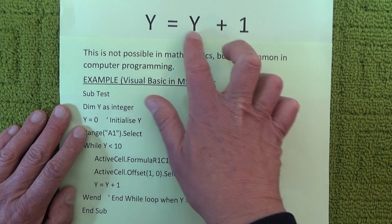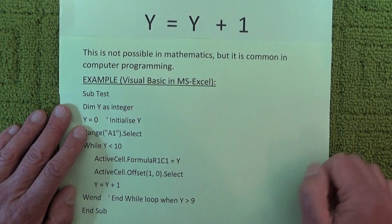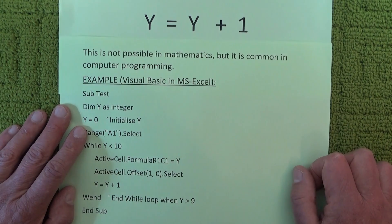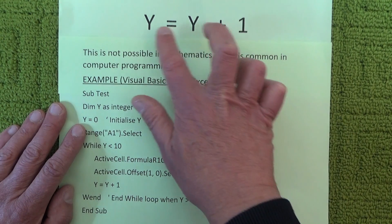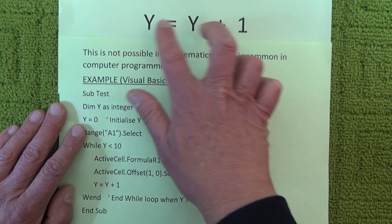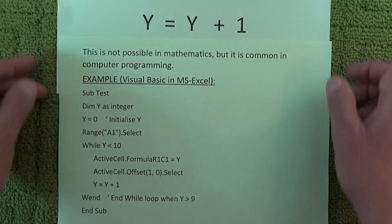So whatever number you put in there, either side of that equation, you're never going to get it to work mathematically because Y always has to be increased by 1. So it just never works.